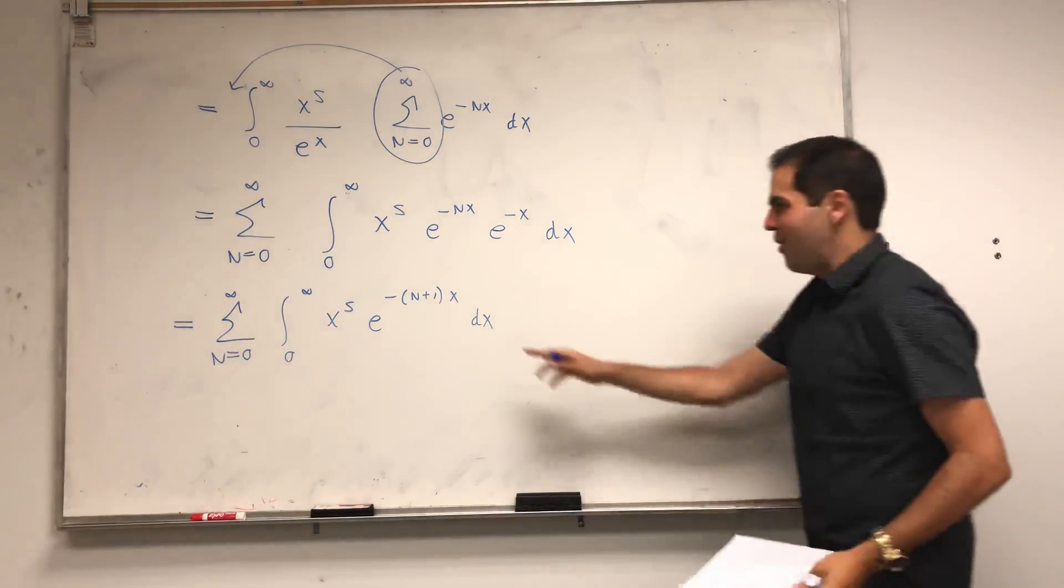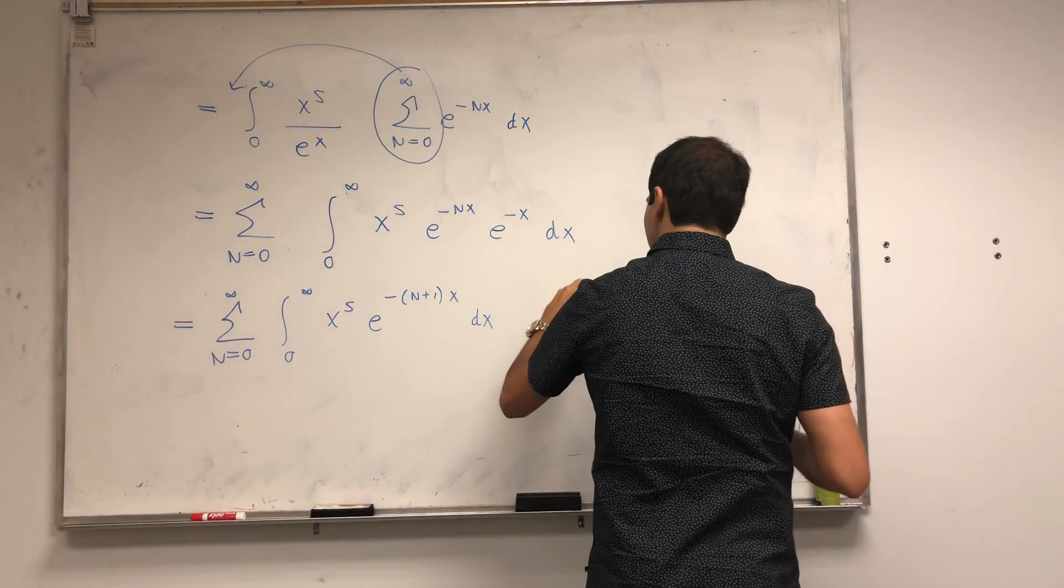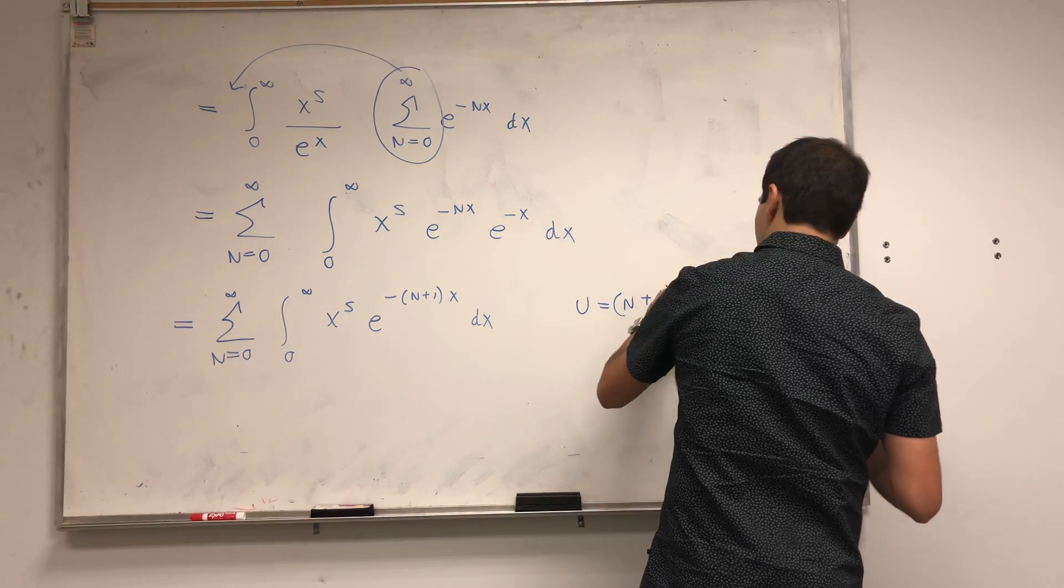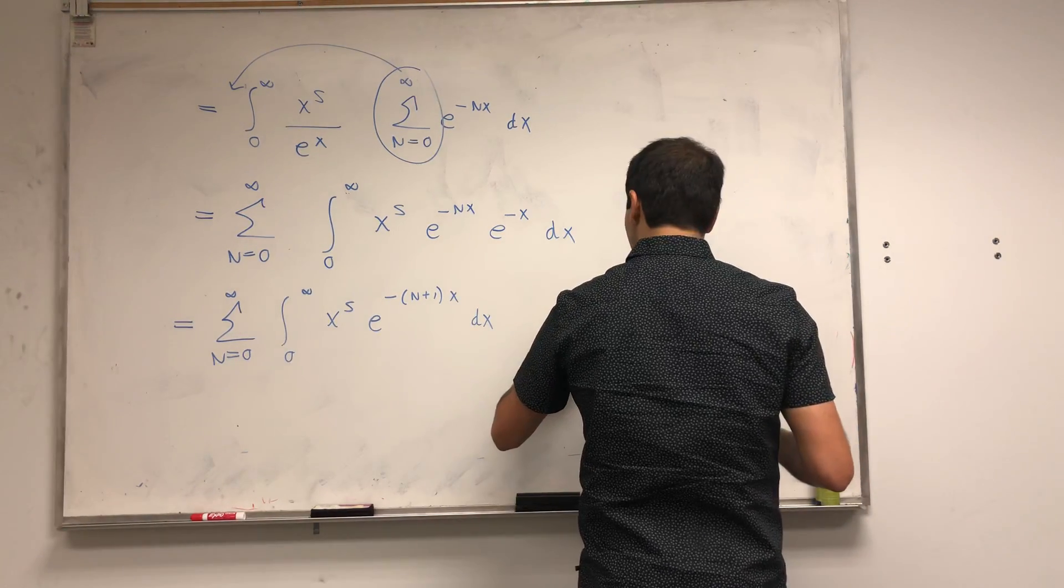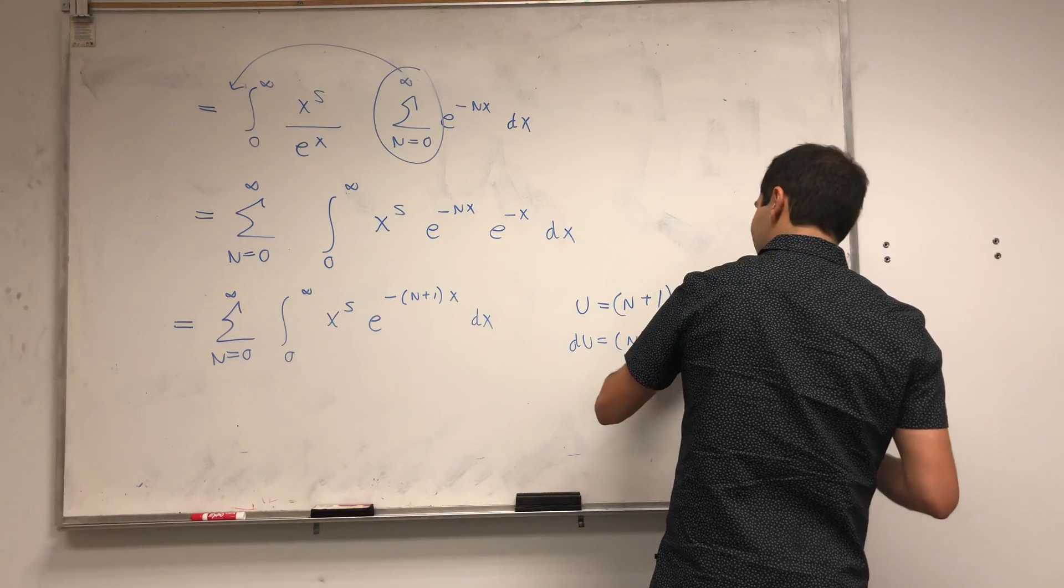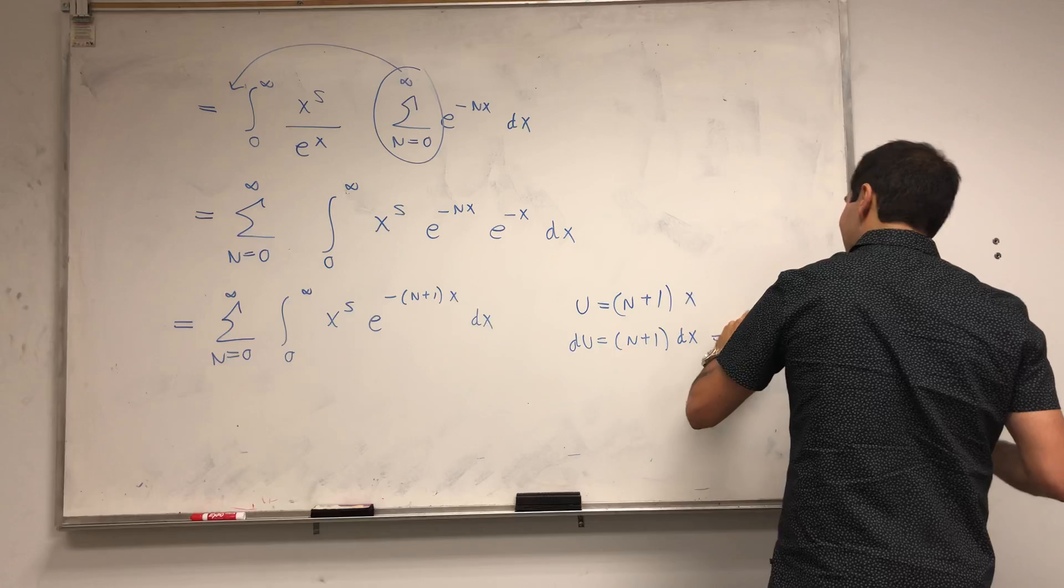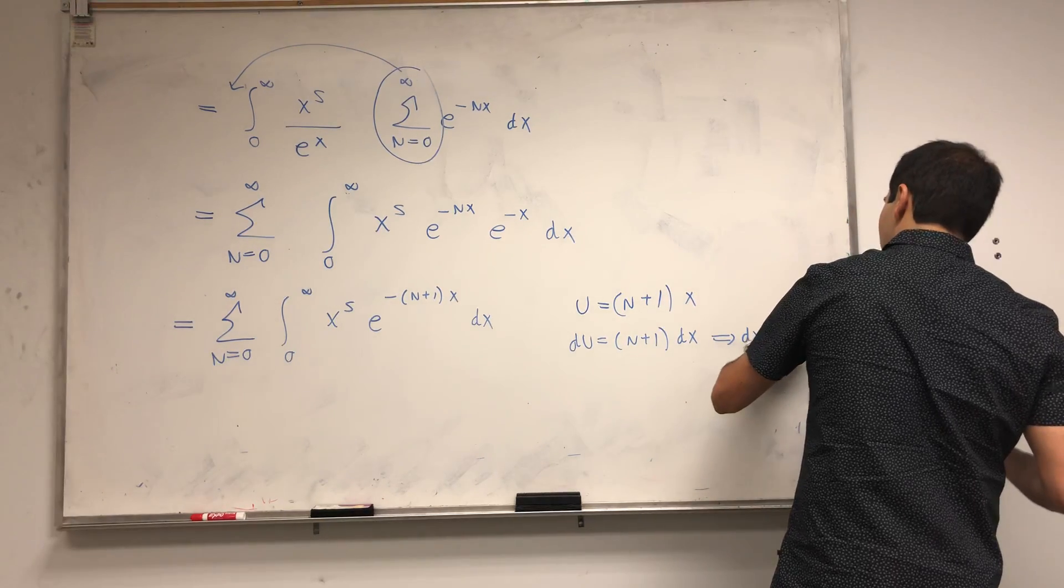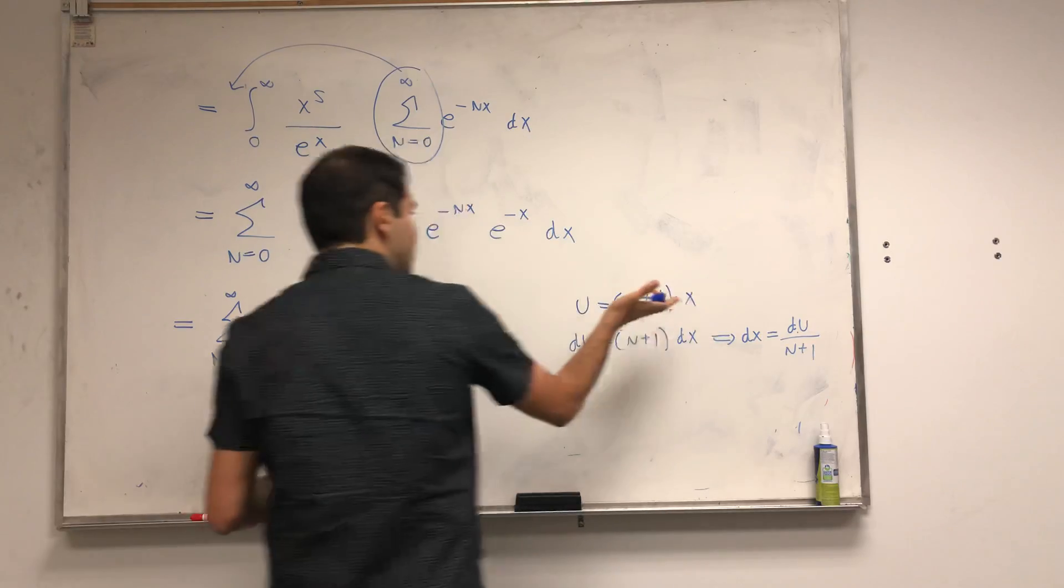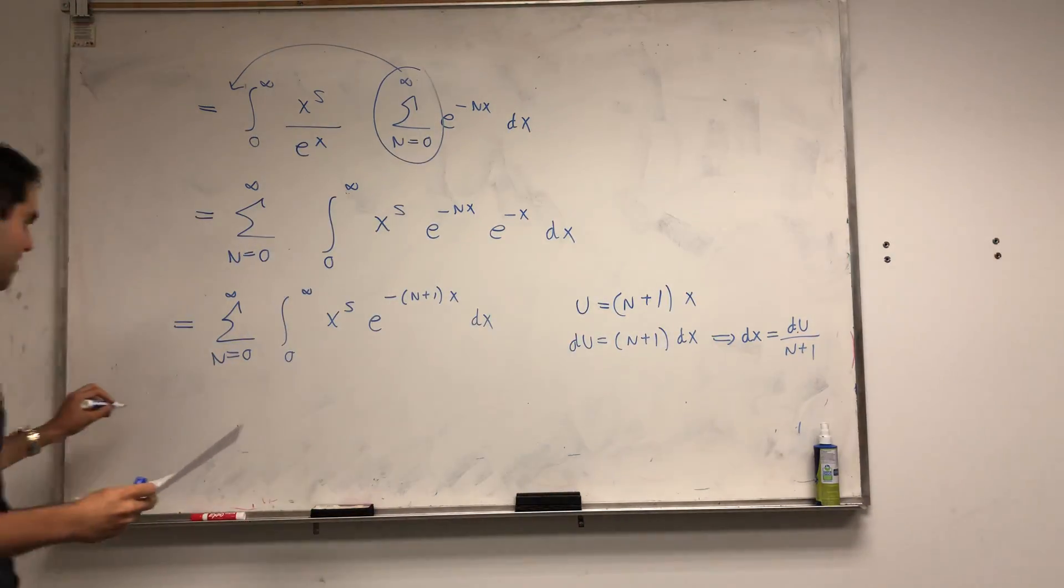And this just calls for a substitution party. So let u be n plus 1 times x. Then du is n plus 1 dx. So dx is du over n plus 1. And the nice thing is at 0, this is 0, at infinity, this is infinity.